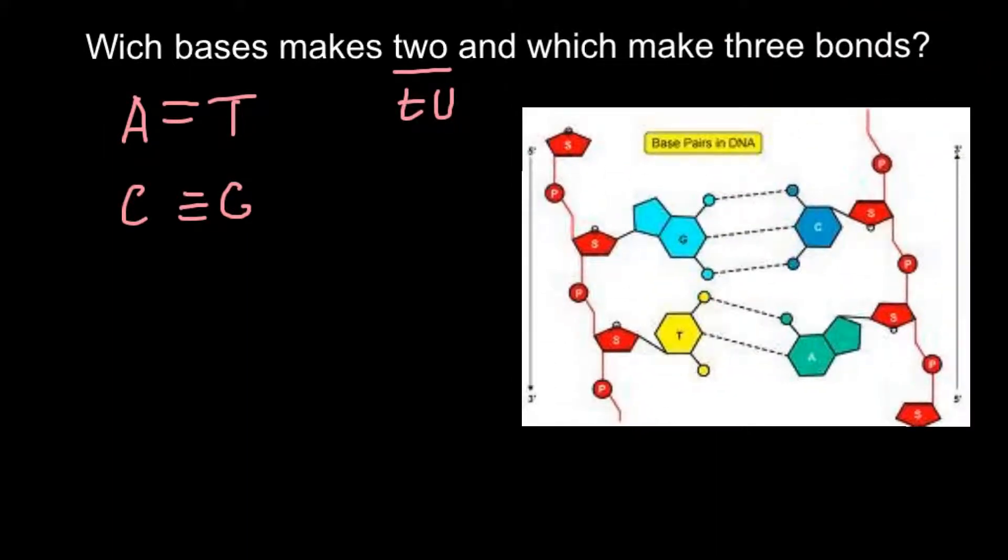So here we have double bond, and this automatically means that cytosine and guanine have triple bond. And here is a picture, and as you see on this picture, guanine and cytosine have triple bond and thymine and adenine have double bond.